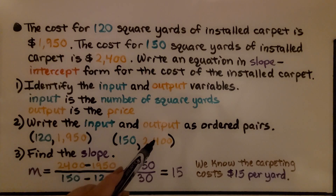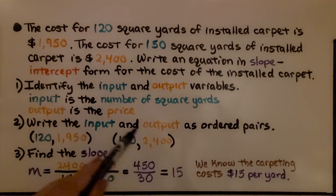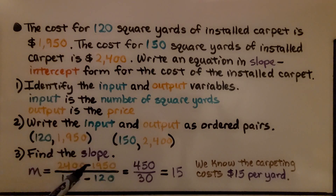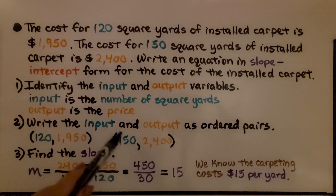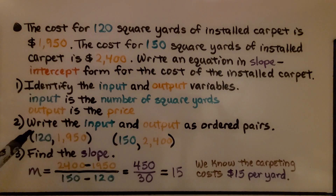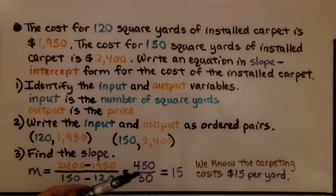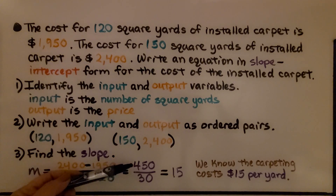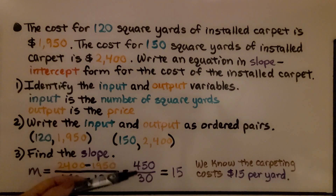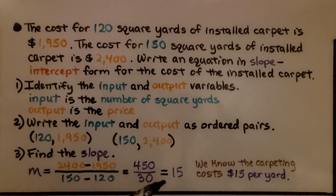We find the slope using the slope formula. The second y minus the first y gives us 450. The second x minus the first x gives us 30. When we simplify 450 over 30, it comes out to 15. So the carpeting costs $15 per square yard.